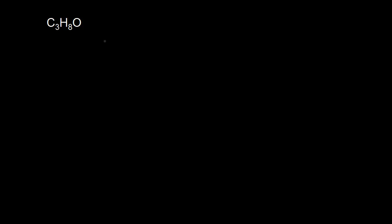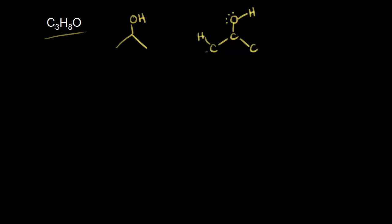Now let's draw all of the structural isomers that have the molecular formula C3H8O, starting with the molecule from the bond line structure video. That molecule had three carbons with an OH coming off of the central carbon. Let's expand that out and verify the molecular formula. We have three carbons, and on the middle carbon we have an OH — an oxygen bonded to a hydrogen — with lone pairs on the oxygen. The carbon on the left needs three hydrogens, the center carbon needs one more hydrogen, and the carbon on the right needs three hydrogens.